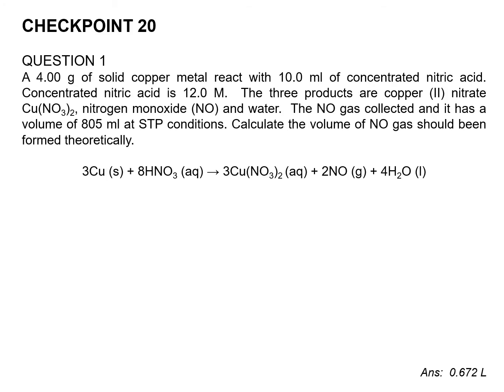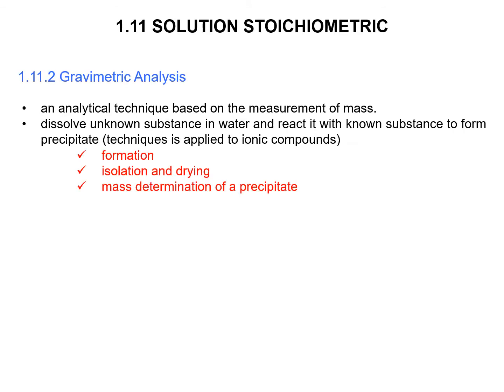For the checkpoint, you will discuss with your lecturer. Next, we move to gravimetric analysis. In gravimetric analysis, it is an analytical technique based on the measurement of mass. It involves dissolving an unknown substance in water and reacting it with a known substance to form a precipitate. It may involve formation, isolation, and drying or mass determination of a precipitate.